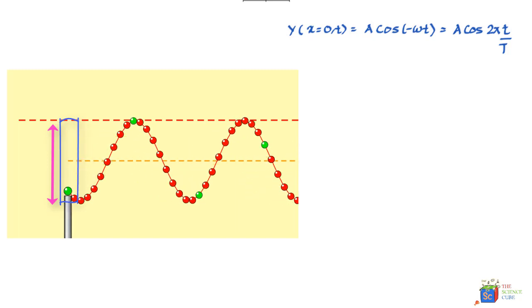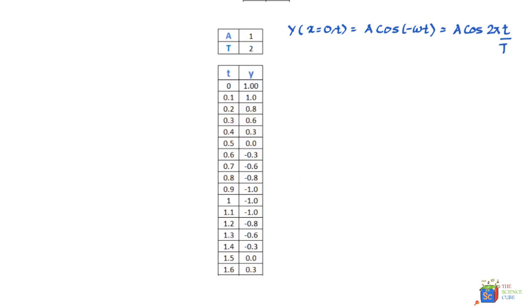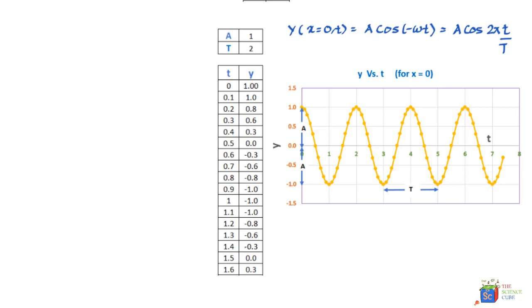So the equation we'll get when we put x is equal to 0 is: y for x is equal to 0 at various times t is equal to A cos minus omega t, which we know is same as A cos omega t. And if we expand this, what you'll get is this equals A cos 2π times t (where small t is any time t) upon the capital T which is a time period of the wave.